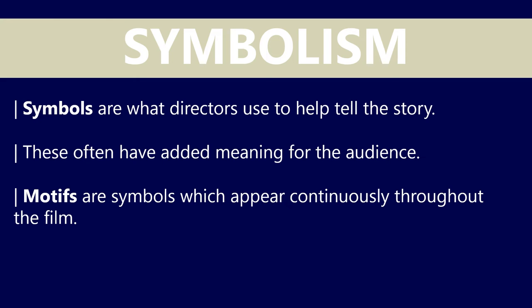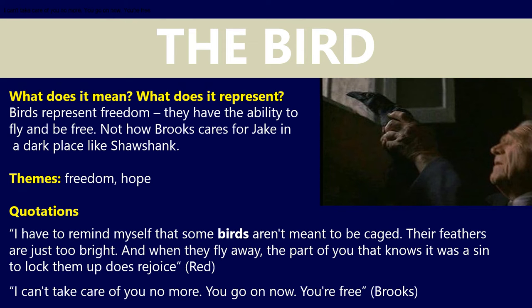Symbols are what directors use to help tell a story, much like film techniques. These also feature in written texts, they have added meaning for the audience, and motifs are symbols which appear continuously throughout the film. We're going to look at a couple of symbols today. We'll start with the bird. Birds represent freedom — they have the ability to fly and be free. Note how Brooks cares for Jake in a dark place like Shawshank, which is quite beautiful. Jake leaves, or Brooks lets Jake go, just before he leaves. The bird flies and is free. There's always a sense of hope for Jake, whereas unfortunately for Brooks, he doesn't have that same sense of hope — life outside Shawshank isn't easy for him. So birds represent freedom and hope.